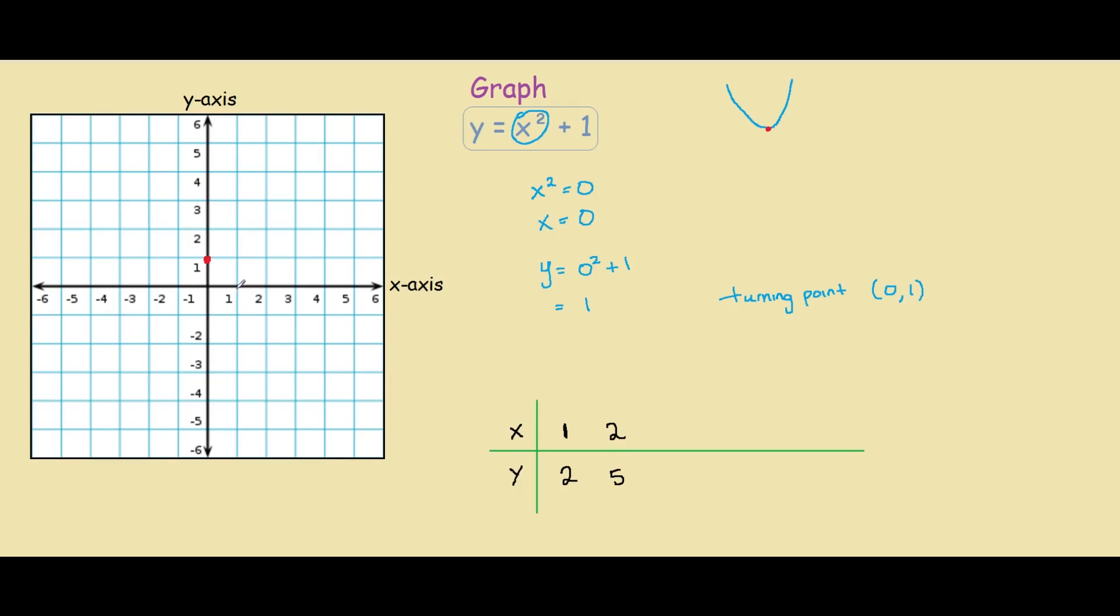On our graph, this would be when x equals 1, y equals 2. When x equals 2, y equals 5. So as you can see, the parabola is starting to take shape on one side already.